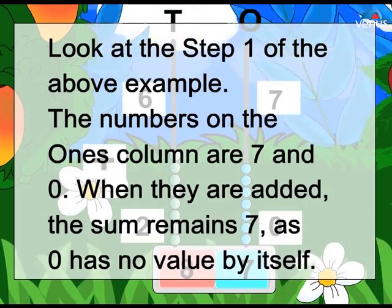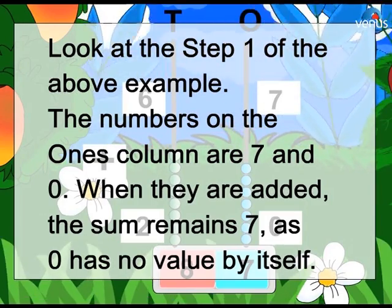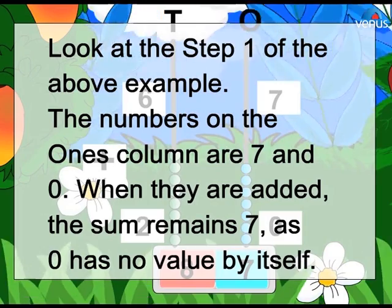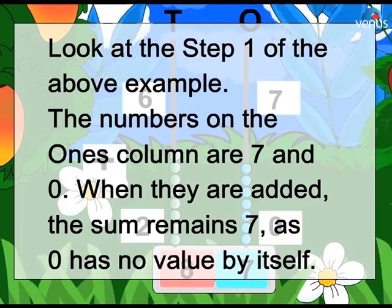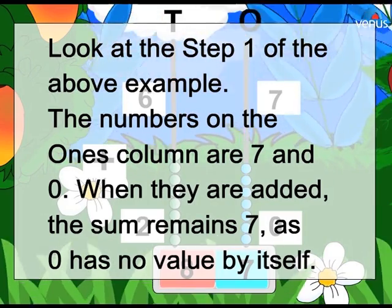Step 1 of the above example. The numbers on the ones column are 7 and 0. When they are added, the sum remains 7, as 0 has no value by itself.